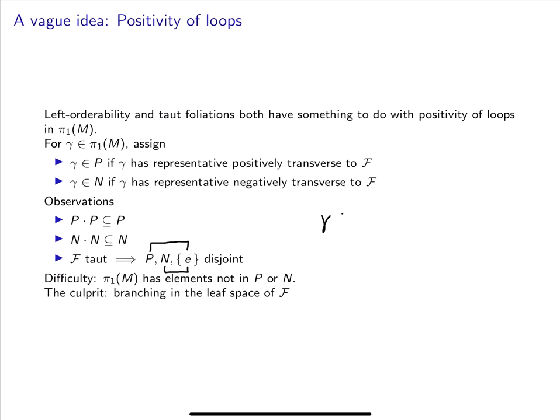Suppose γ is in P, and γ is in N. That implies that γ inverse is in P, so γ·γ⁻¹ is in P. But this contradicts tautness again. So P and N are disjoint cones, but unfortunately they don't cover all of the fundamental group. There are loops which can't be homotoped to be transverse to the foliation. The reason for this is branching in the leaf space of the foliation.